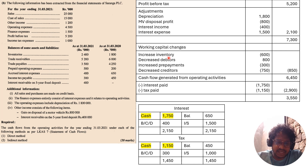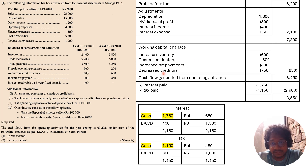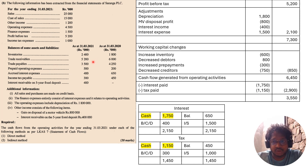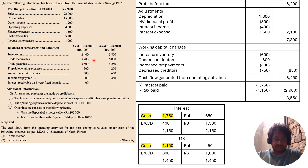For working capital changes: an increase in current assets is treated as a cash outflow and a decrease as a cash inflow; an increase in current liabilities is a cash inflow and a decrease is a cash outflow. Finally, you deduct the interest paid and tax paid that were calculated earlier. That is how you prepare operating activities under the indirect method.